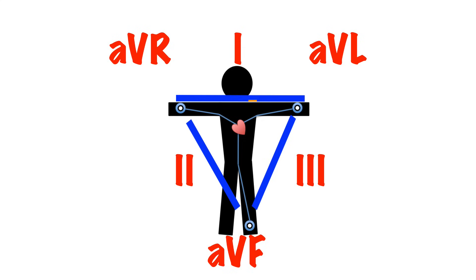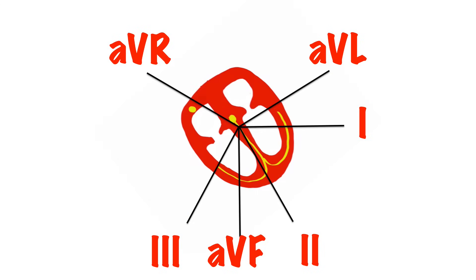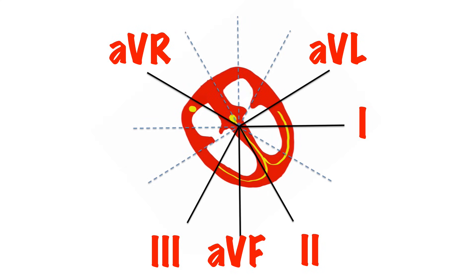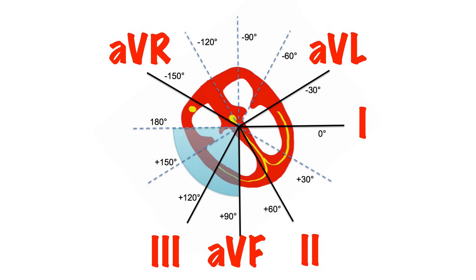These leads will look at the heart from the following angles or vectors. This may be a diagram that you're familiar with from your textbooks. This is why we like looking at Lead 2 so much when monitoring ECGs, because the majority of the impulse in a normal heart should be travelling towards it, giving us the best general view. The normal cardiac axis is considered to be from +90 to -30 degrees. Left axis deviation goes from -30 to -90 degrees. Right axis deviation goes from +90 to +180 degrees. Anything outside this is termed extreme axis deviation, which is rare.